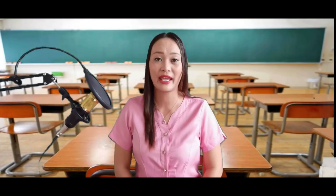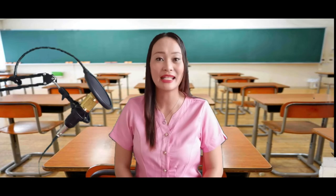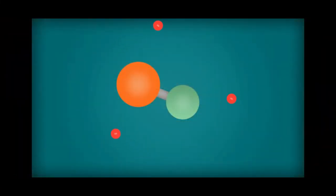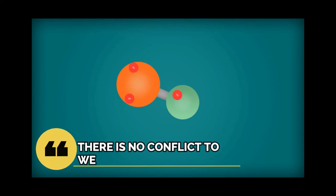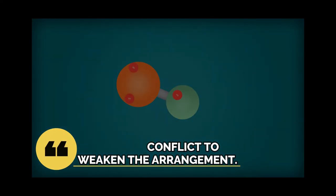Why are covalent bonds so important in nature? Covalent bonds are the strongest bonds in nature. This is due to the even sharing of electrons between the bonded atoms. And as with anything equally shared, there is no conflict to weaken the arrangement.